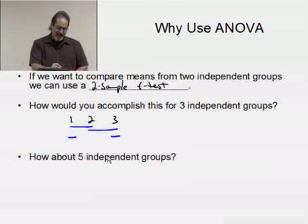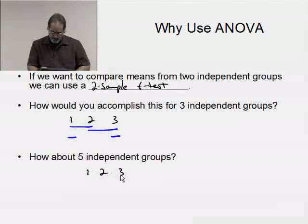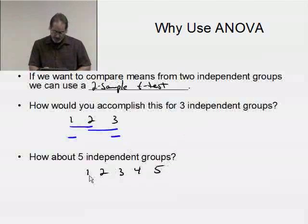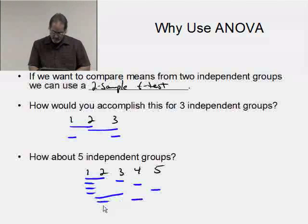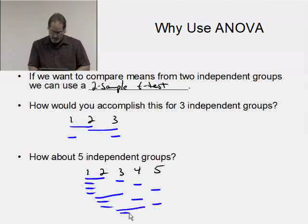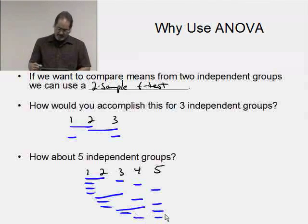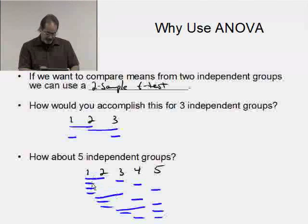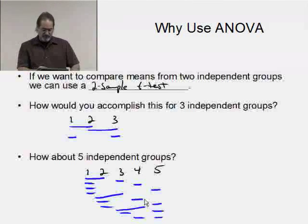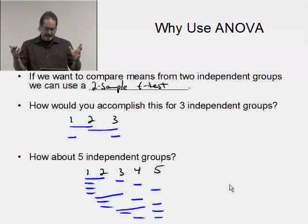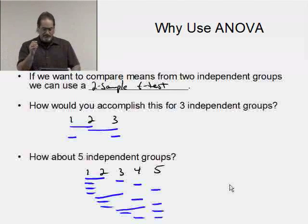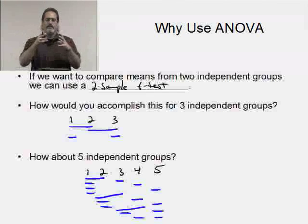What if I had five groups? I could do between one and two, one and three, one and four, one and five, two and three, two and four, two and five, three and four, three and five, and four and five. That's a bunch of t-tests. I don't want to do it. You could spend the whole day doing t-tests trying to do it two at a time, trying to figure out who's bigger than the other.